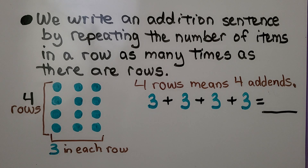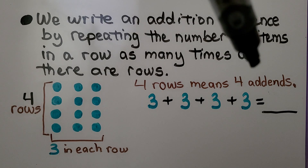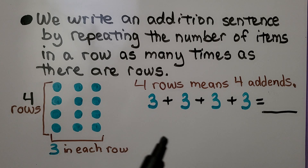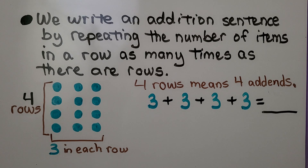We write an addition sentence by repeating the number of items in a row as many times as there are rows. We have 4 rows, so 4 rows means 4 addends. There are 3 in each row, so that's our addend — 3. So we have 3 plus 3 plus 3 plus 3. If you said 12, you're correct.